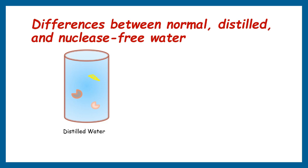The process of distilling is very simple. Heat the water to the point that it turns to vapor. When the vapor condenses back to water, it leaves behind any mineral residue — the resulting condensed liquid is distilled water. However, distilled water still contains impurities, fluorescent materials, and DNAs and RNAs.